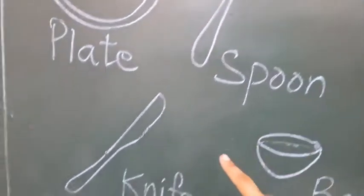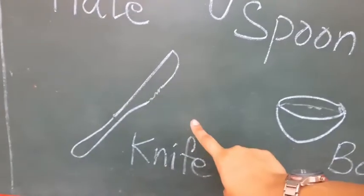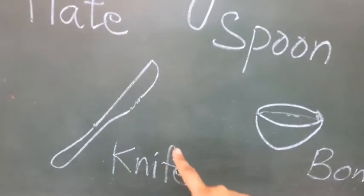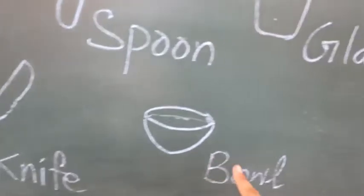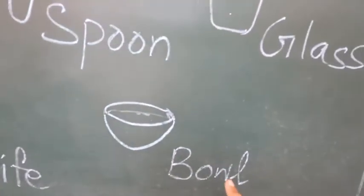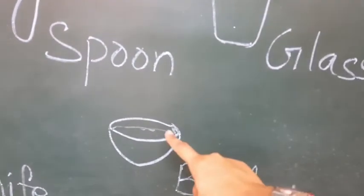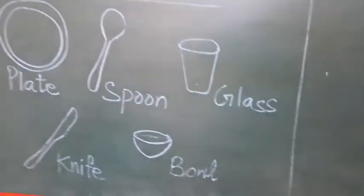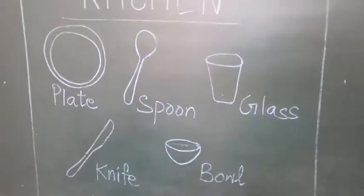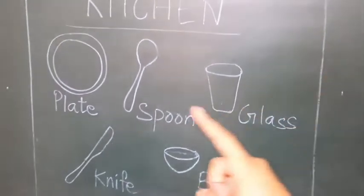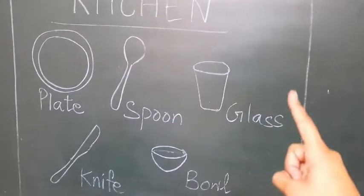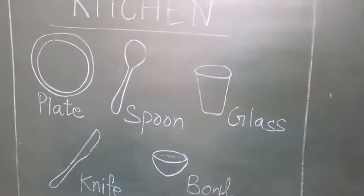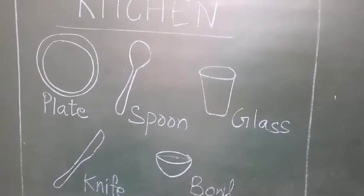This is a glass. Then next you have knife. This is a knife. Say knife. And next is bowl. This is a bowl. So these are the things we have revised in the topic kitchen — plate, spoon, glass, knife, and bowl. I hope it is clear to you now.